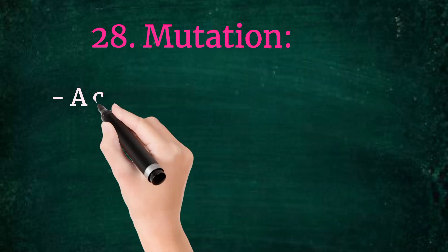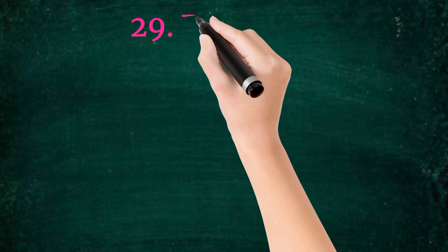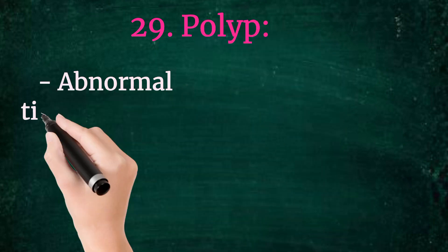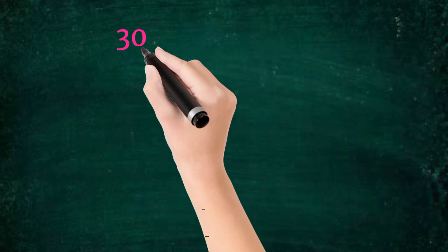28. Mutation. A change in the DNA sequence of a gene. As you can see in this picture, on one side there is normal DNA chain and on the other side mutation chain, from which you can easily identify it. 29. Polyp. Abnormal tissue growth projecting from a mucous membrane. As you can see in this picture, some umbrella-like structure you can see in the mucous membrane line.